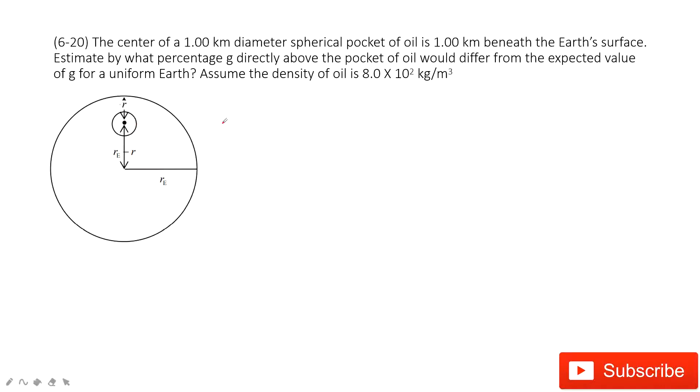So how can we do that? First thing we can consider, now the g gets changed. So now the g acceleration due to gravity becomes the first one we can consider. The g due to the earth, nothing changes, right?